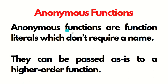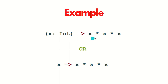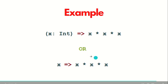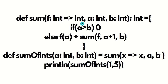The last topic is anonymous functions. Anonymous functions are function literals that don't require a name — that's why they're called anonymous. They can be passed directly to a higher order function. The syntax is: parameters of the anonymous function followed by '=>' and the function body. For example, to calculate the cube of a number anonymously, you write it inline without any function name.